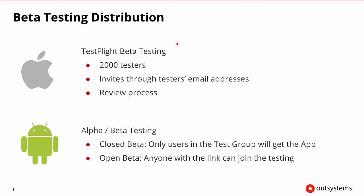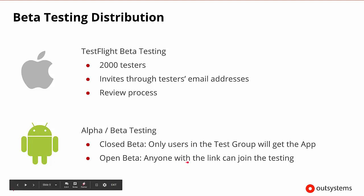There are a number of beta testing distributions. Apple has their own TestFlight beta testing with up to 2,000 testers. The testers are invited through their email address, and then they participate in an overall review process. Android has both alpha and beta testing, with both closed and open versions. In a closed beta, only the users in the test group will be allowed to get the app. In an open beta, anyone with the link can join the testing.